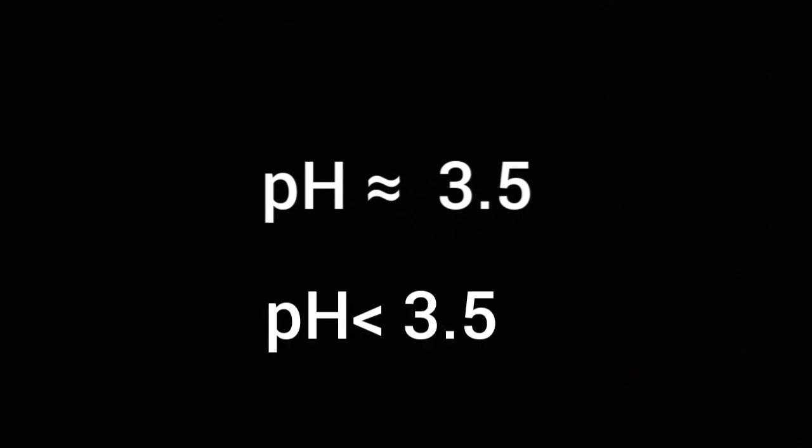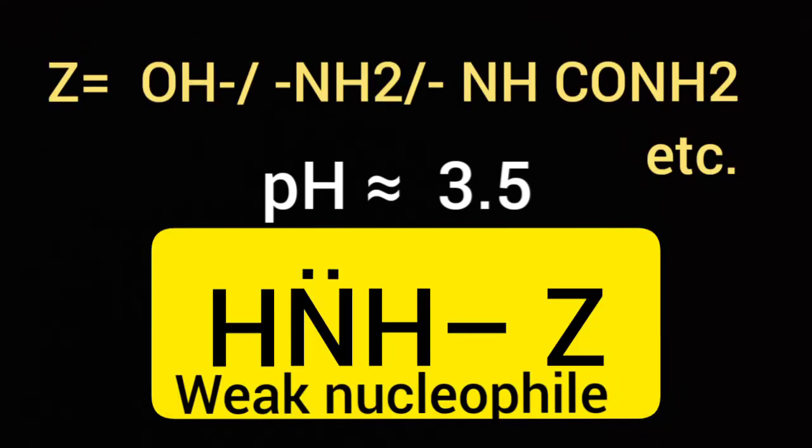If pH is less than 3.5, then H+ cannot attack the O of carbonyl group. So the positive charge in carbon is not developed. Ammonia derivative being a weak nucleophile cannot attack the carbonyl carbon.